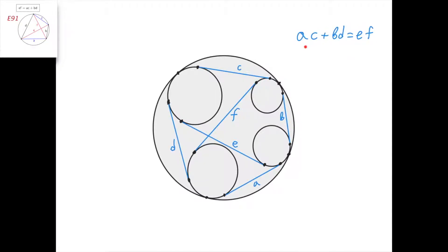This is similar to what Ptolemy's theorem states. Ptolemy's theorem states the same thing, but instead of taking circles and tangent lines to those circles, we just take points on the circle and connect the points. This means that if the four circles have a zero radius, they would essentially turn into points, and then Ptolemy's theorem would give us that AC plus BD equals E times F.